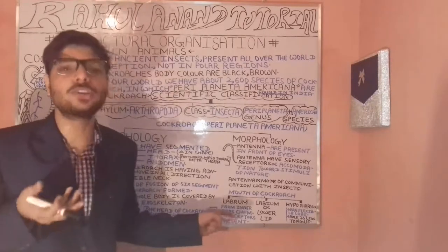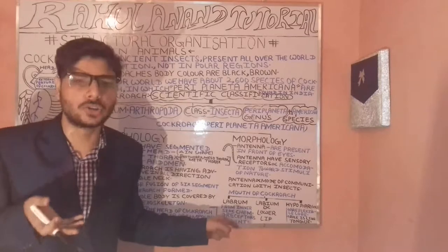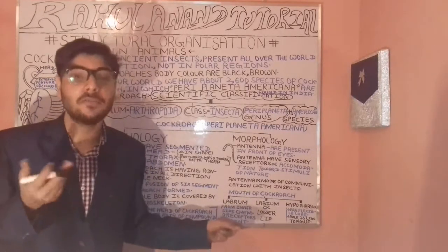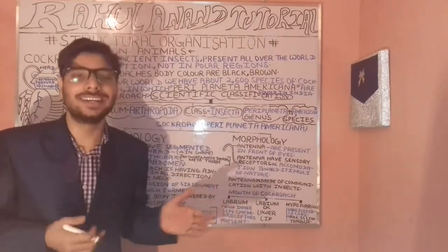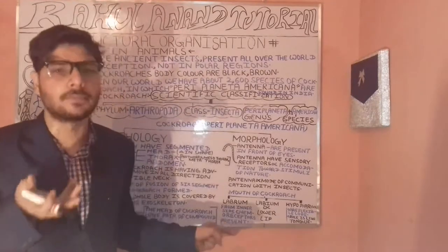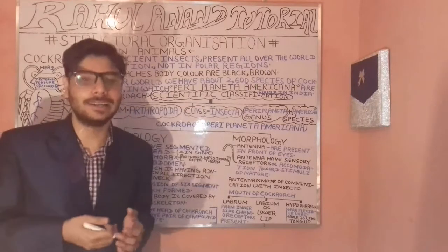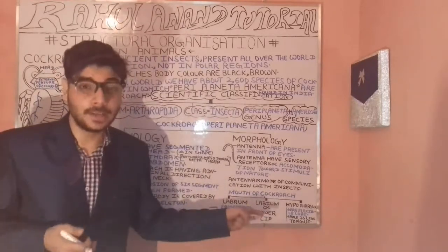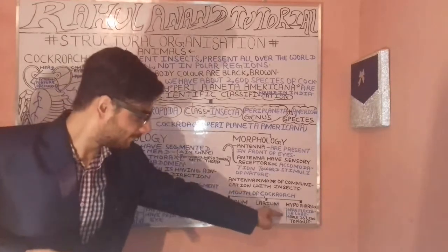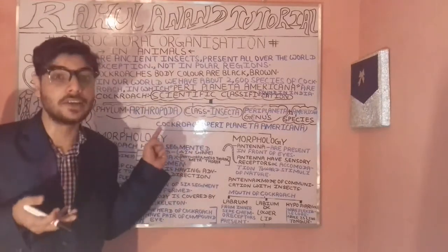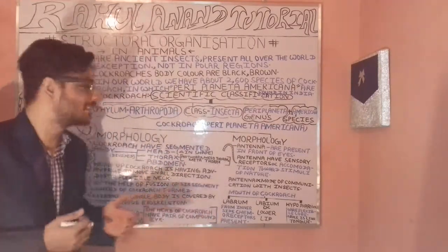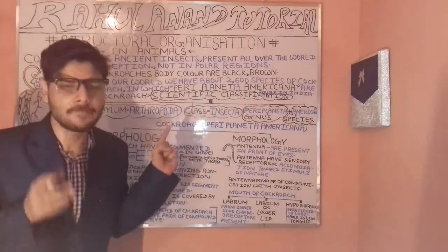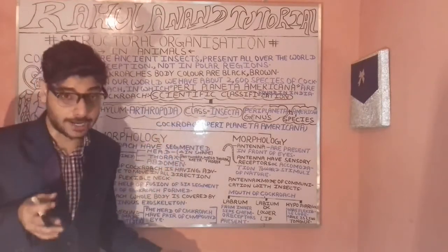The mouthparts of the cockroach have a specialized mechanism including the labrum, labia, and hypopharynx. From the inner side, chemo-receptors are present. The labrum corresponds to the upper lip, the labia correspond to the lower lip, and the hypopharynx is a tongue-like structure. The compound eyes are made up of ommatidia.